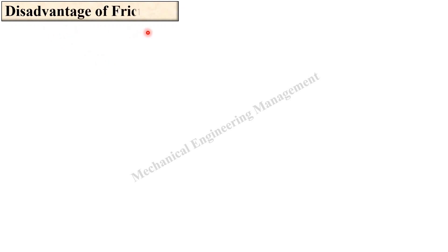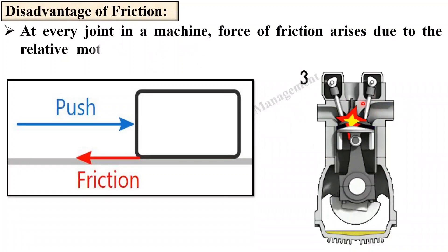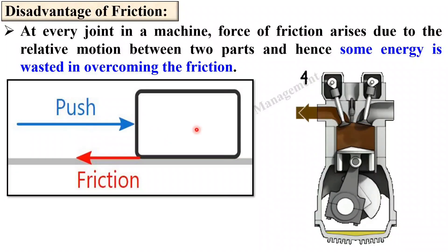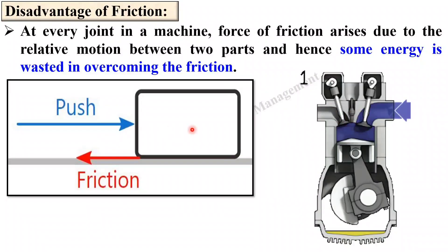Disadvantage of friction. At every joint in a machine, here you can see this is actually an IC engine, force of friction arises due to the relative motion between two parts. Here you can see there is a relative motion between piston and cylinder and hence some energy is always wasted in overcoming the friction. Here also you can see if this body will move in the direction of the push then there will be always friction force which opposes the motion of the body.